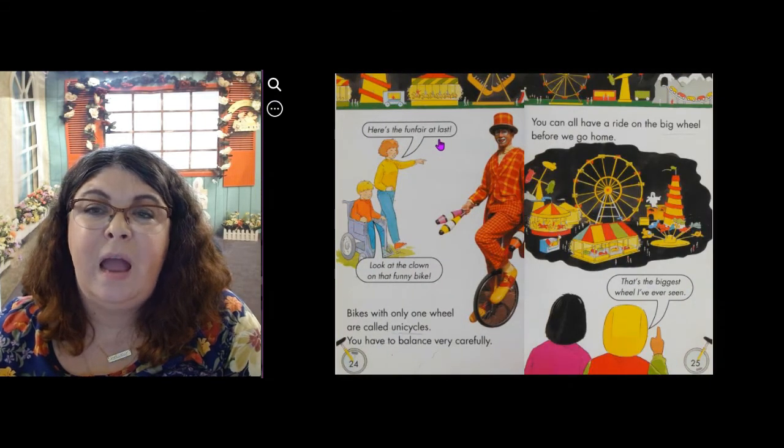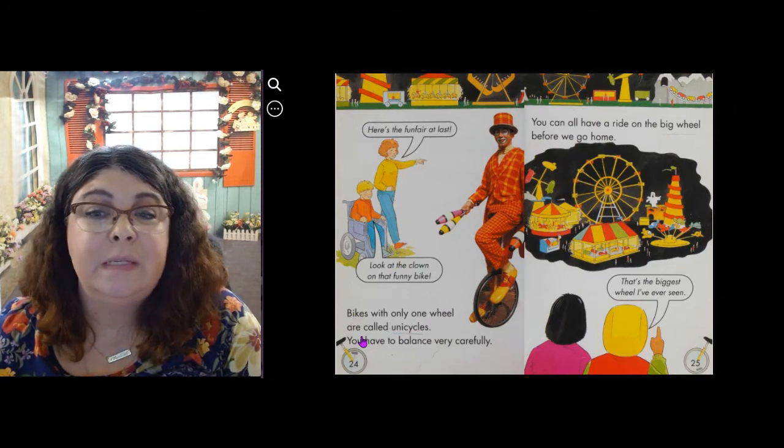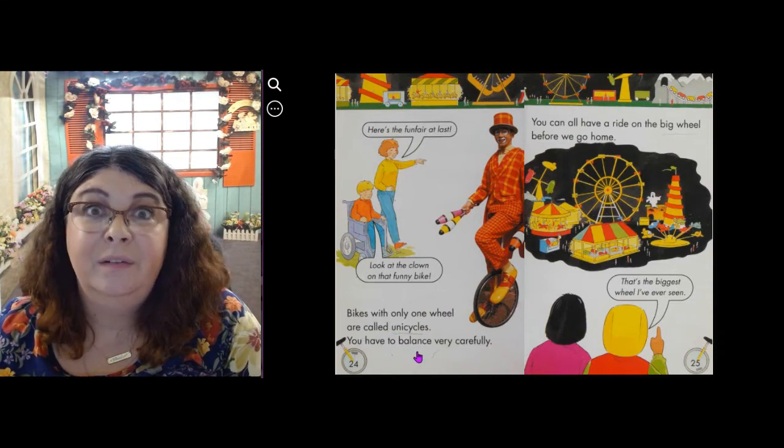Here's the fun fair at last. Look at that clown on that funny bike. Bikes with only one wheel are called unicycles. You have to balance very carefully.